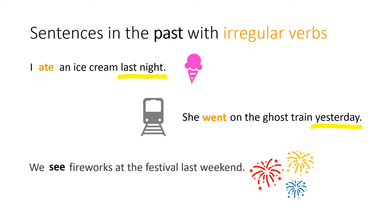And the last sentence: "We see fireworks at the festival last weekend." Last weekend is in the past, so we can't say see, we have to say saw. We saw fireworks at the festival last weekend.